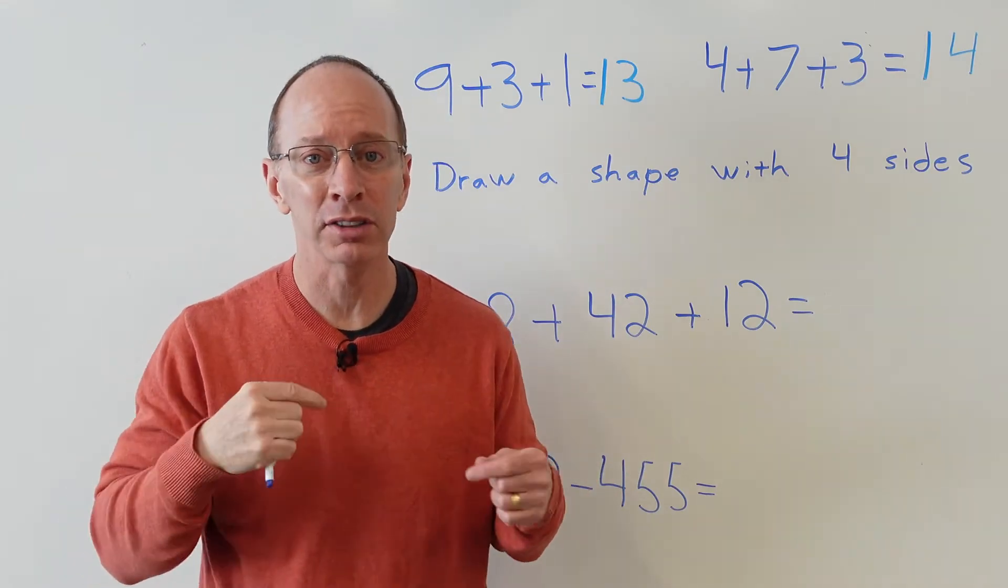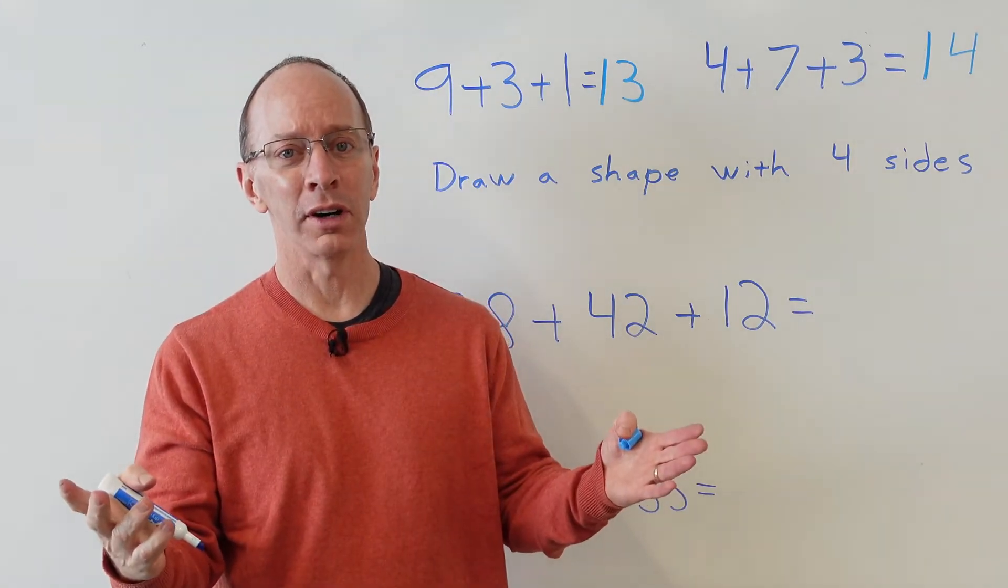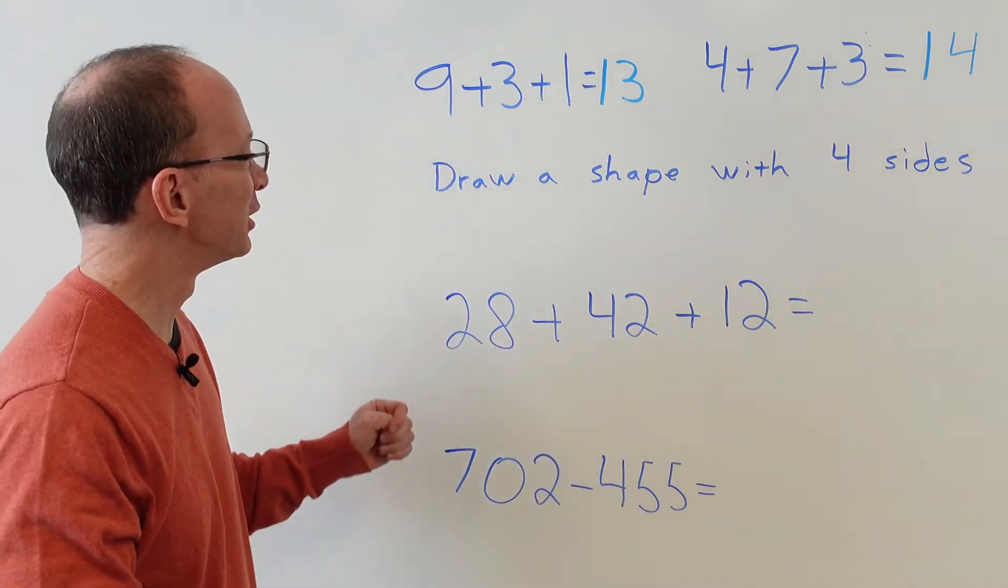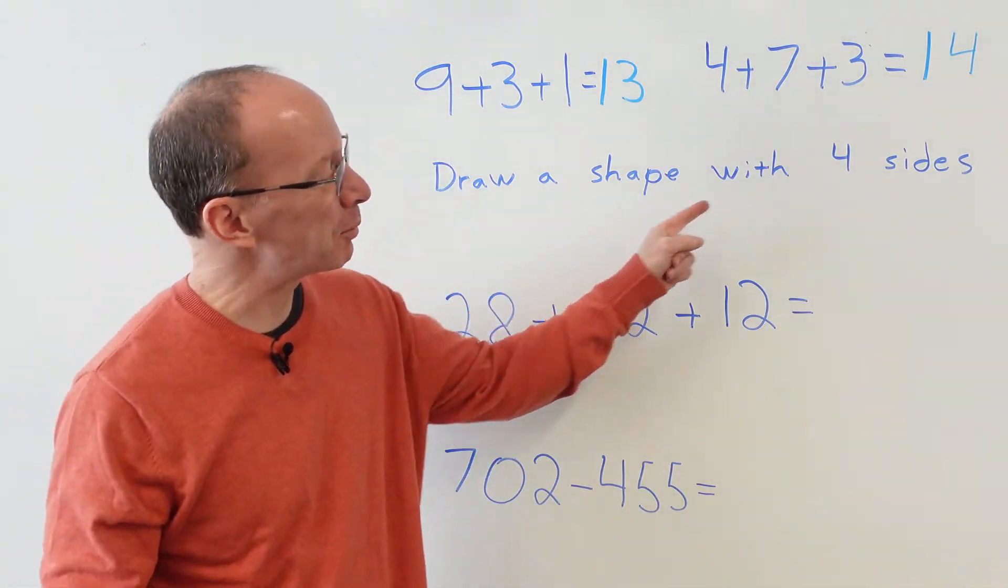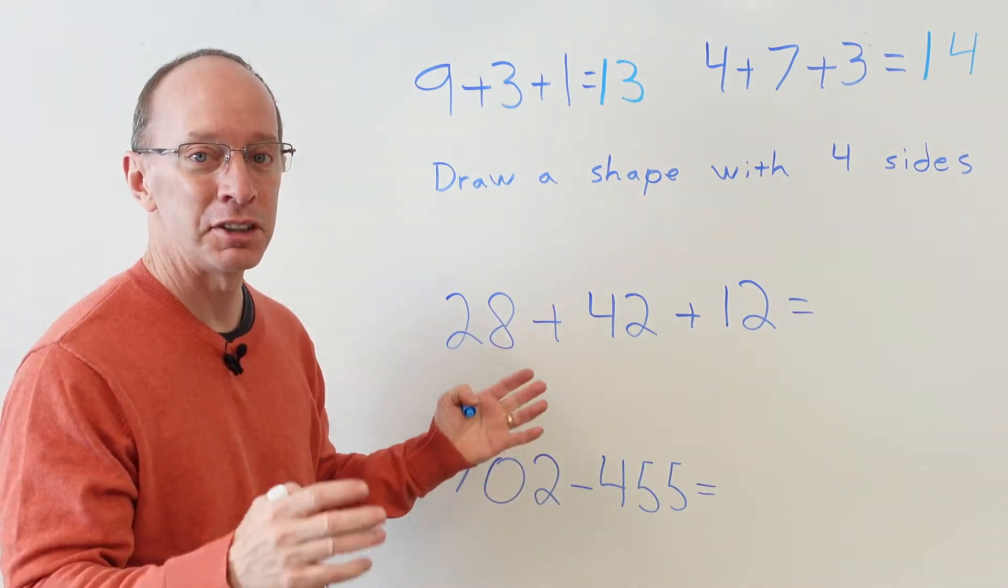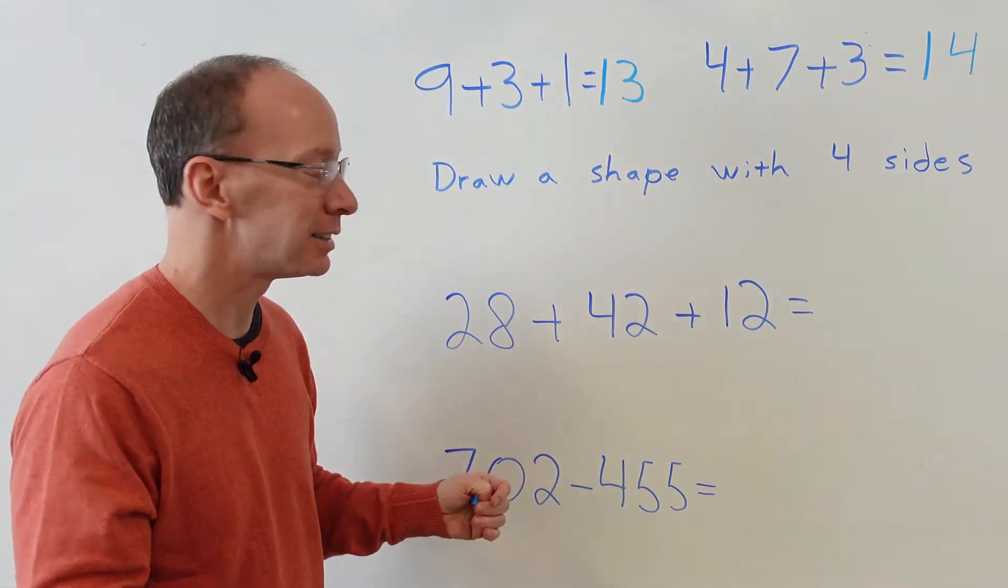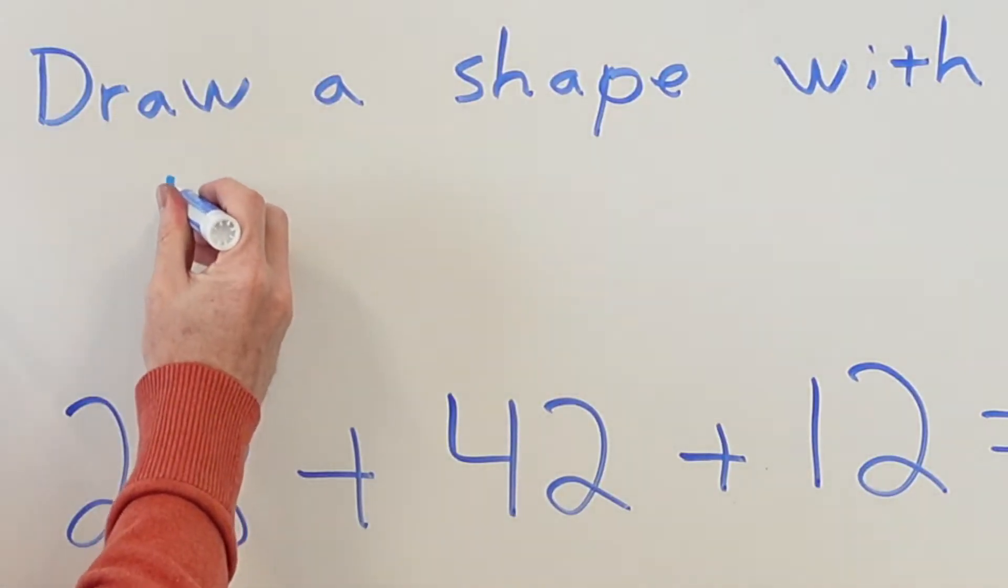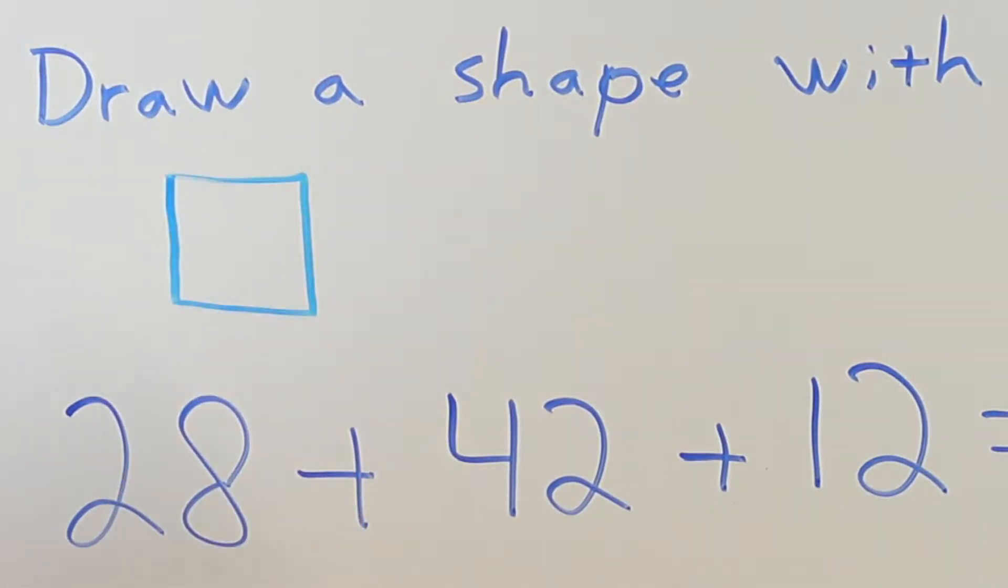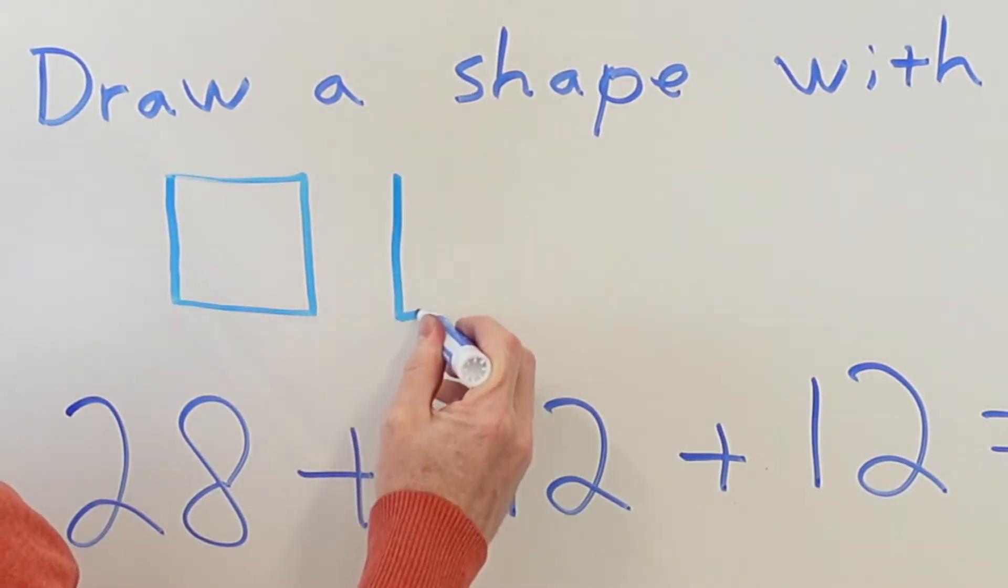Because their horns don't work! Anyway, I thought that was a pretty cool joke. Draw a shape with four sides. Now there's lots of different shapes that you can make with four sides. You can make a square which is equal on all four sides, or you could do a rectangle which is a little longer on these two sides here.